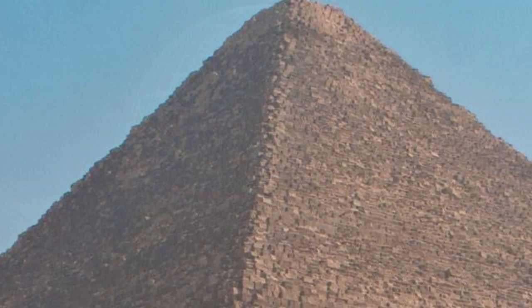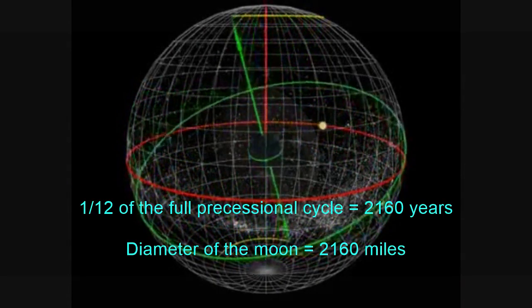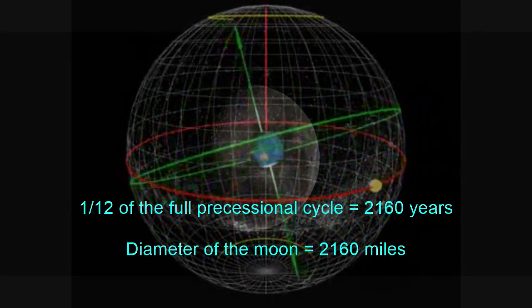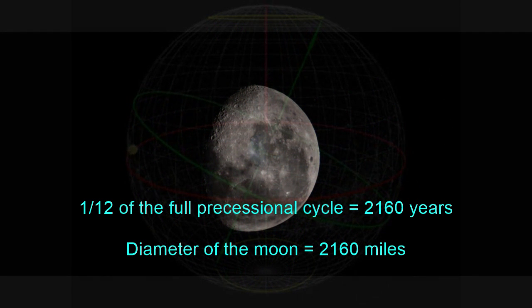Thirdly, many of the numbers are precessionally significant. The diameter of the Moon in miles is the same as the number of years it takes for the equinoxes to precess through one zodiacal constellation.